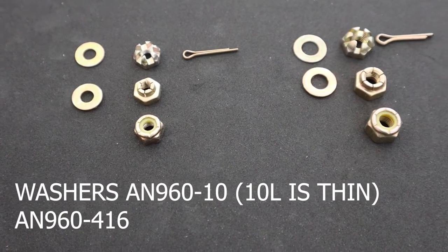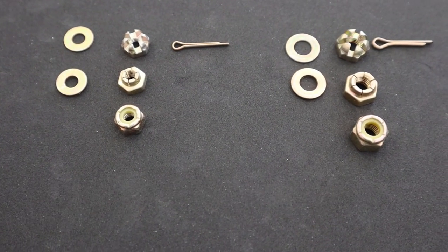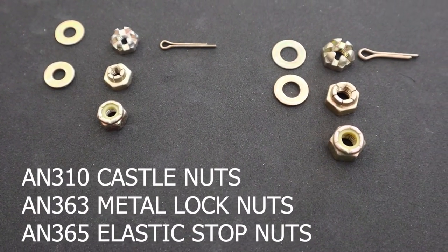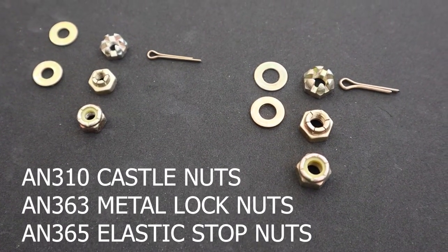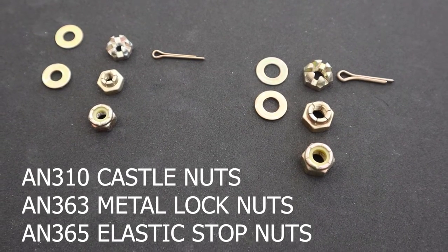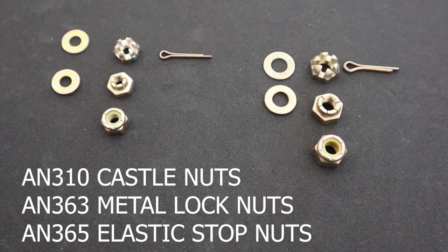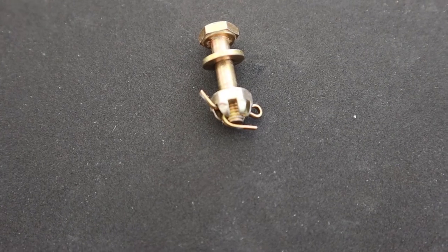So for washers, we have the AN-9-60 and we have the 10 and the 10L for regular and thin, and then the different nuts, the castle nut with the cotter pin, the normal elastic stop nuts, which are used most of the time, and then you have the metal lock nuts, which would be typically used in the engine compartment.